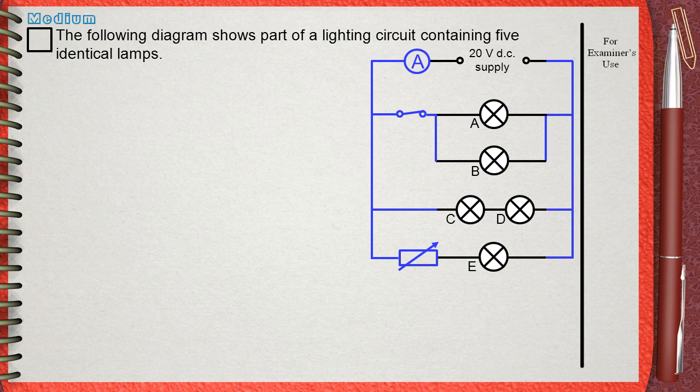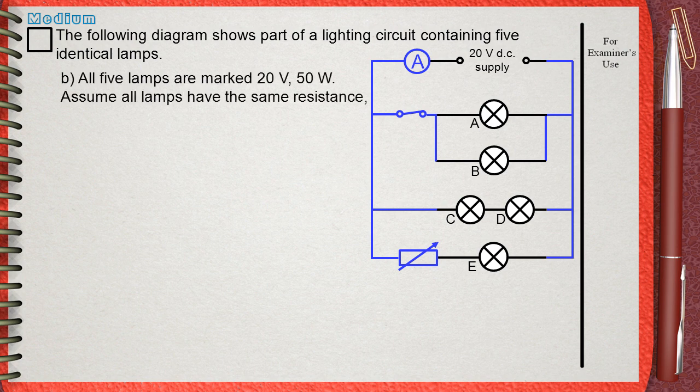The following diagram shows part of a lighting circuit containing five identical lamps. All five lamps are marked 20V. Assume all lamps have the same resistance.